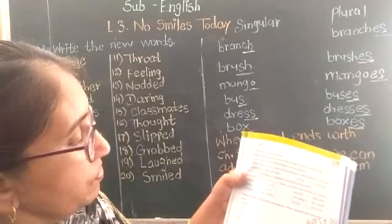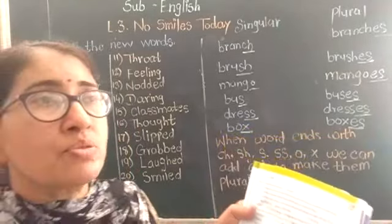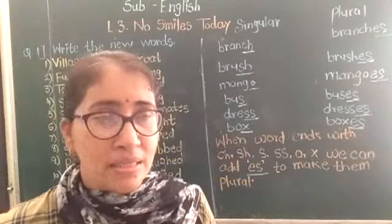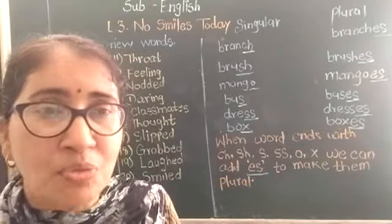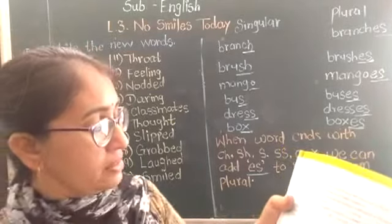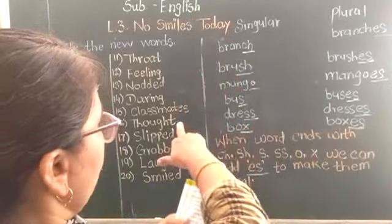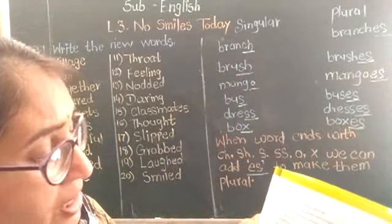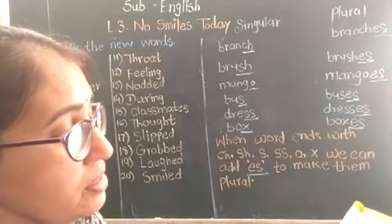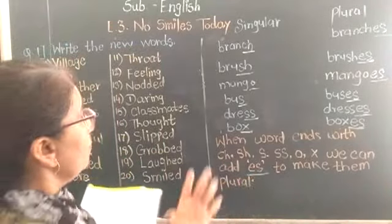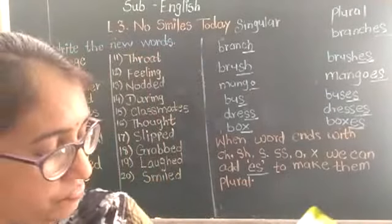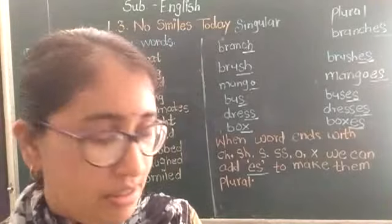For bag, the ending letter G is not from our list, so we simply add S — it becomes bags. Now, children, open page number 29 for this exercise. Sandwich — S-A-N-D-W-I-C-H — ends with CH. So you add ES to make it plural. It becomes sandwiches — S-A-N-D-W-I-C-H-E-S.